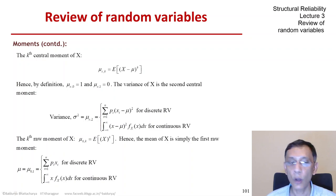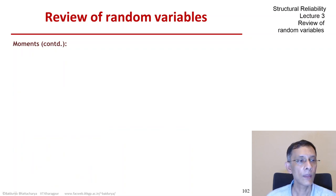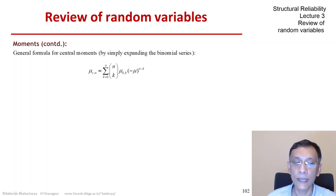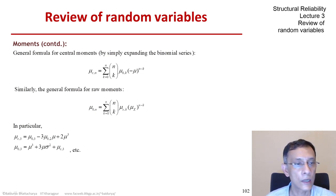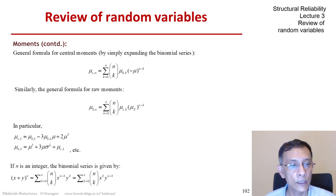Likewise, you can define the kth raw moment. So e of x to the power of k and the first raw moment is the mean itself. You can express the central moments in terms of the raw moments and vice versa using the simple binomial series. So I have the expressions here and particular cases like the third central moment in terms of the raw moments or the third raw moments in terms of the central moments. And at the bottom of the screen, you see the binomial series of x and y.